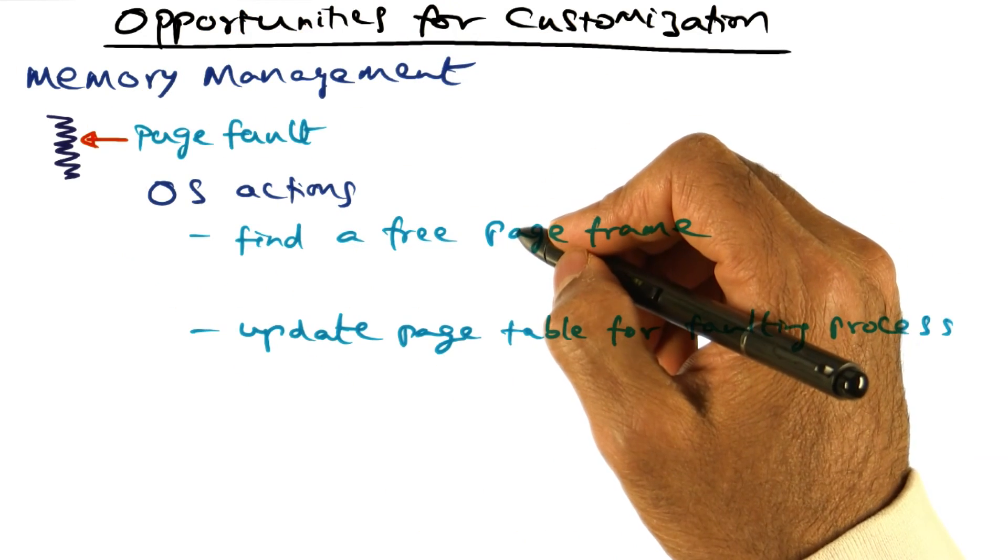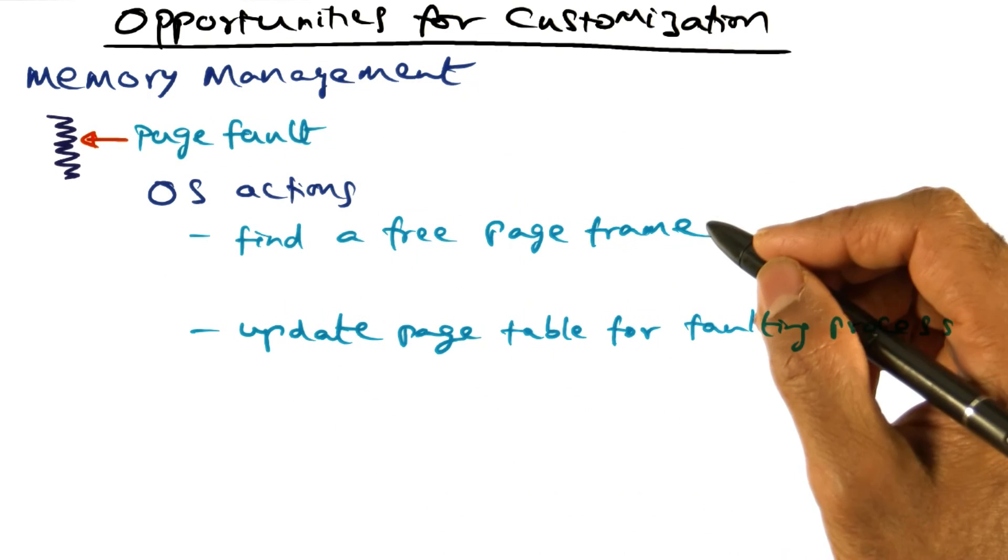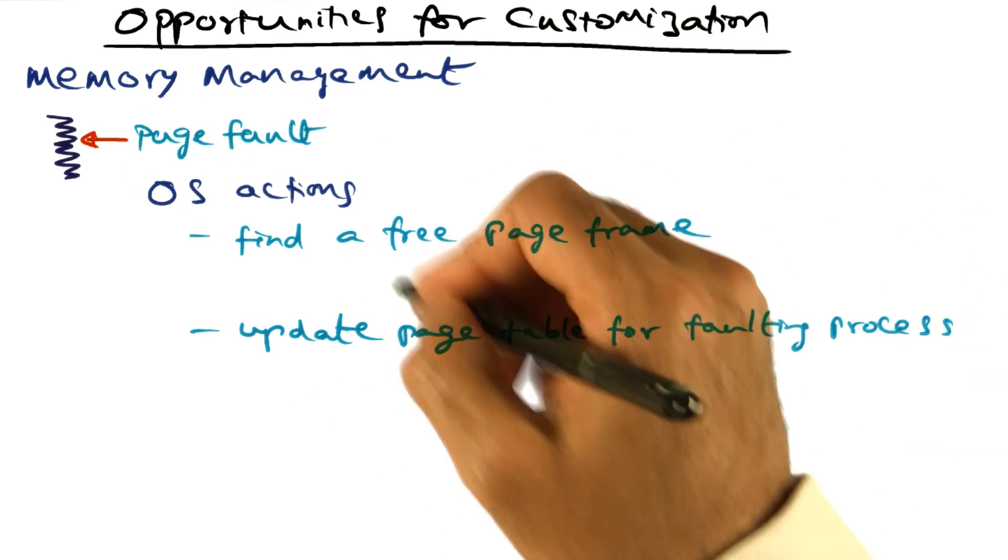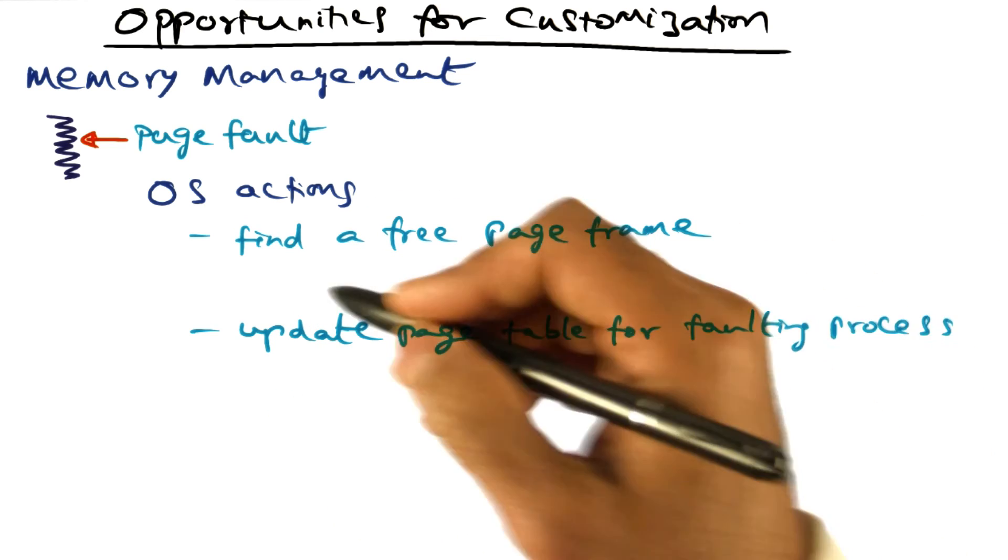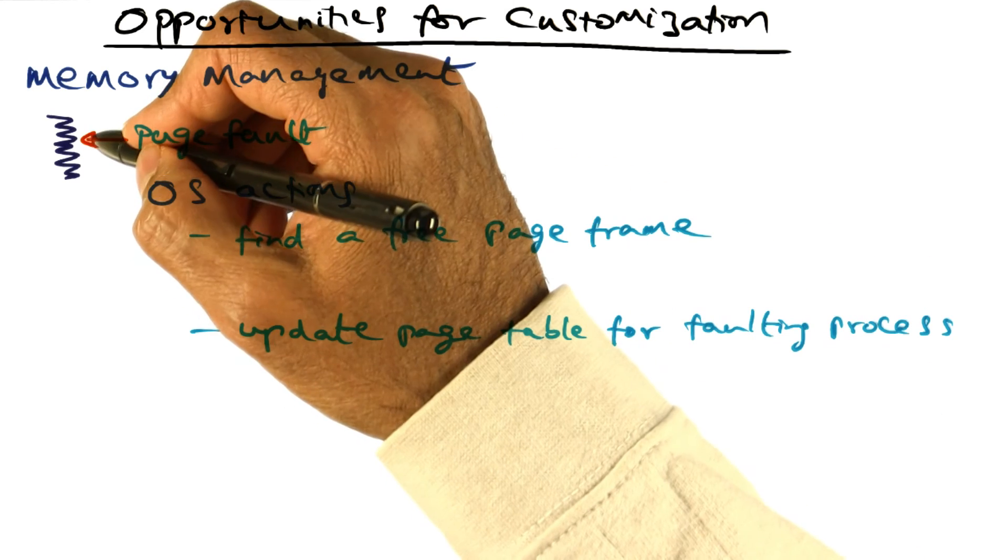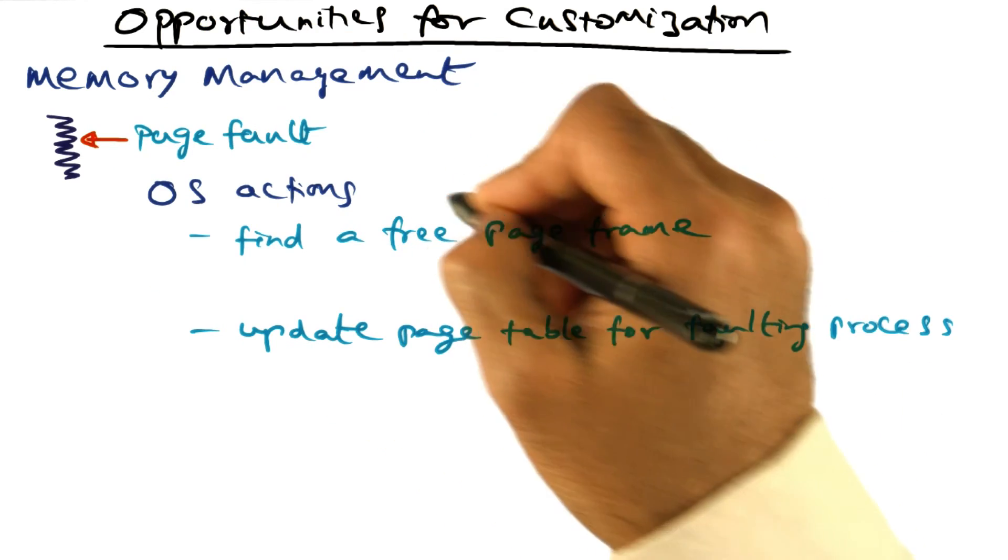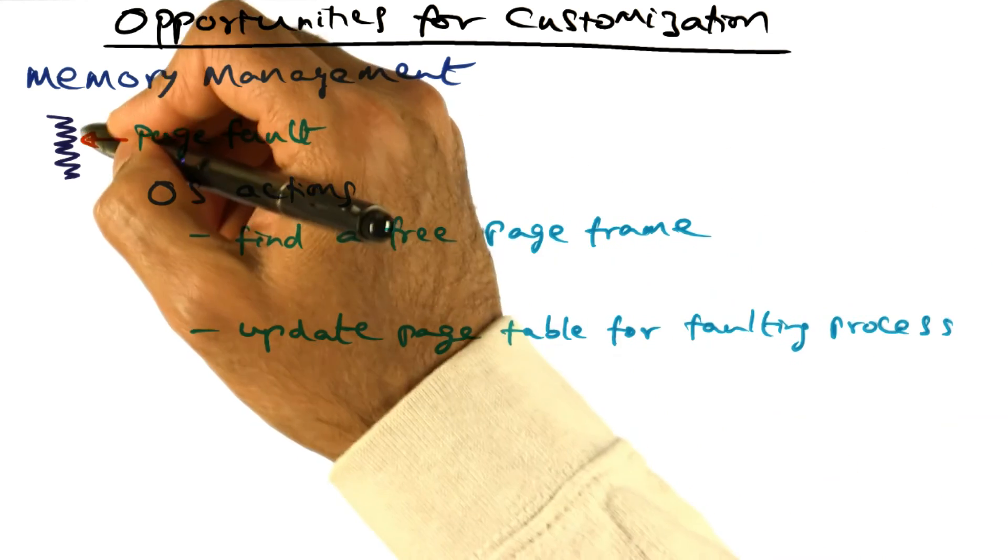Once the IO is complete and the missing page for this thread has been brought from storage into the free page frame, the operating system is going to update the page table for this thread or process, establishing the mapping between the missing virtual page and the page frame that has been allocated for hosting that missing page.